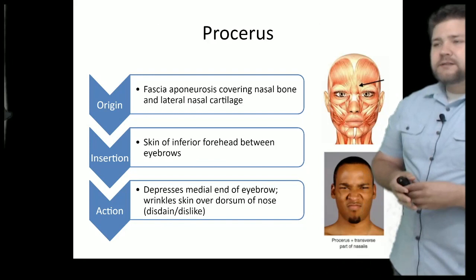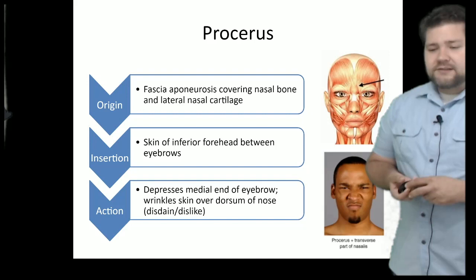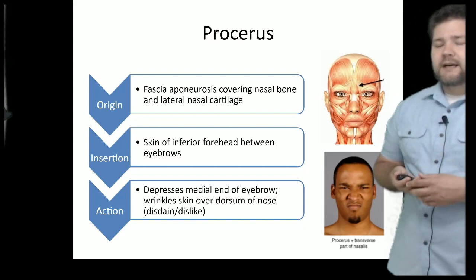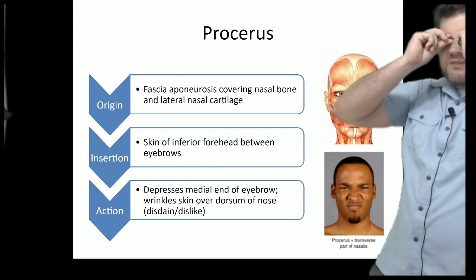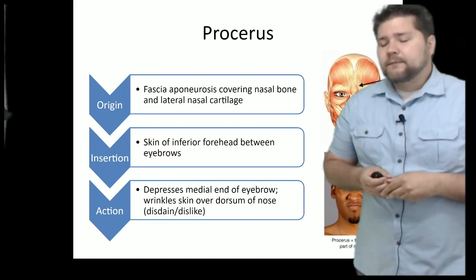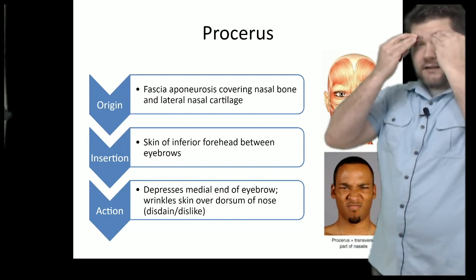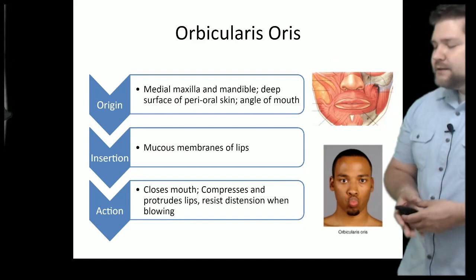The procerus is a muscle on the bridge of the nose at the top. It's the muscle of disdain or dislike — when you see a movie you don't like or smell something gross. It kind of wrinkles up the nose and narrows the eyes, bringing the upper brow down and the lower brow up. That contrasts with the frontalis and corrugator supercilii, which bring the brows up higher.